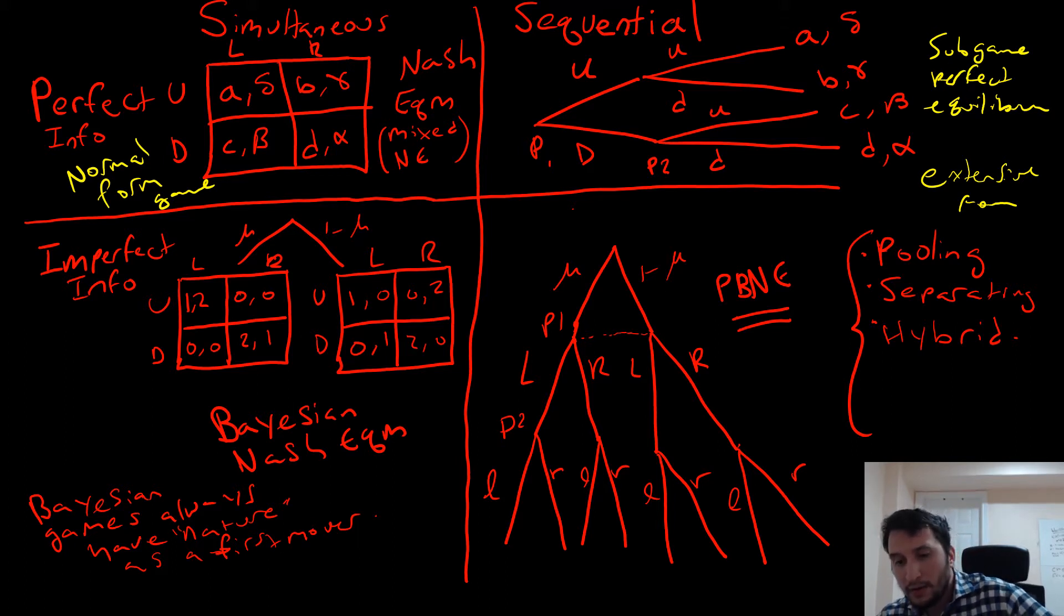With our perfect Bayesian equilibrium, we have nature as our first mover but we have a sequential move game, meaning that we'll observe the moves but we don't actually know what game is being played. There are a couple of different equilibrium concepts: pooling perfect Bayesian Nash equilibrium, separating perfect Bayesian Nash equilibrium, or hybrid perfect Bayesian Nash equilibrium. Let's go through those solution concepts.